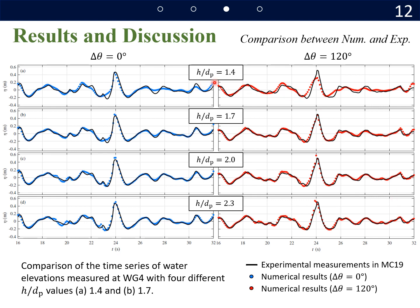In the following sea states and crossing sea states. For the h/dp value of 1.4, numerical results show underestimation in both sea states. However, the other cases, numerical results are very similar, and it is difficult to find appropriate value.